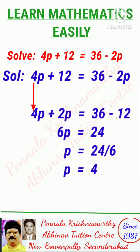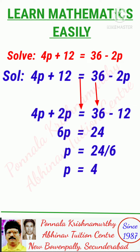4p plus 2p — minus 2p comes to the left hand side and becomes plus 2p — is equal to 36 minus 12. Plus 12 comes to the right hand side and becomes minus 12.